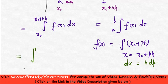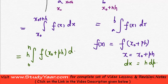So you have this transformed into integral 0 to n f of x0 plus ph, and instead of dx, you have h into dp. Since h is a constant, I will just keep it outside and I have dp.